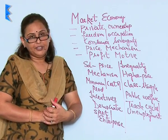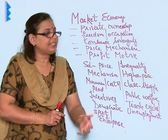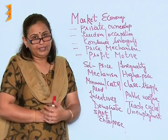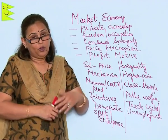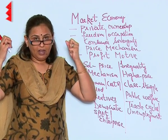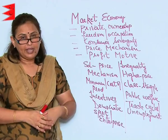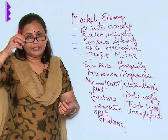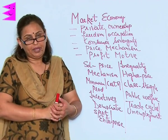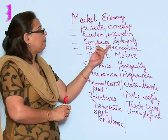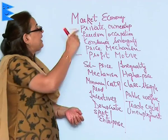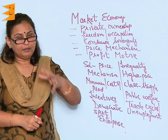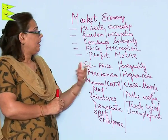Consumer sovereignty is at its best in the market economy. There is a wide choice — for example, on the roads there would be cars of so many makes and at competitive prices, which means the consumer has so much choice that the consumer becomes the king. The best part of a market economy is that the consumer is termed the king of the economy.